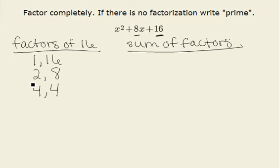Now notice I'm only listing positive factors of 16. For example, negative 1 and negative 16 would be factors of positive 16. But I notice that I need to sum to a rather large positive number, so I'm guessing that my factors that are going to work in this situation are going to both be positive.